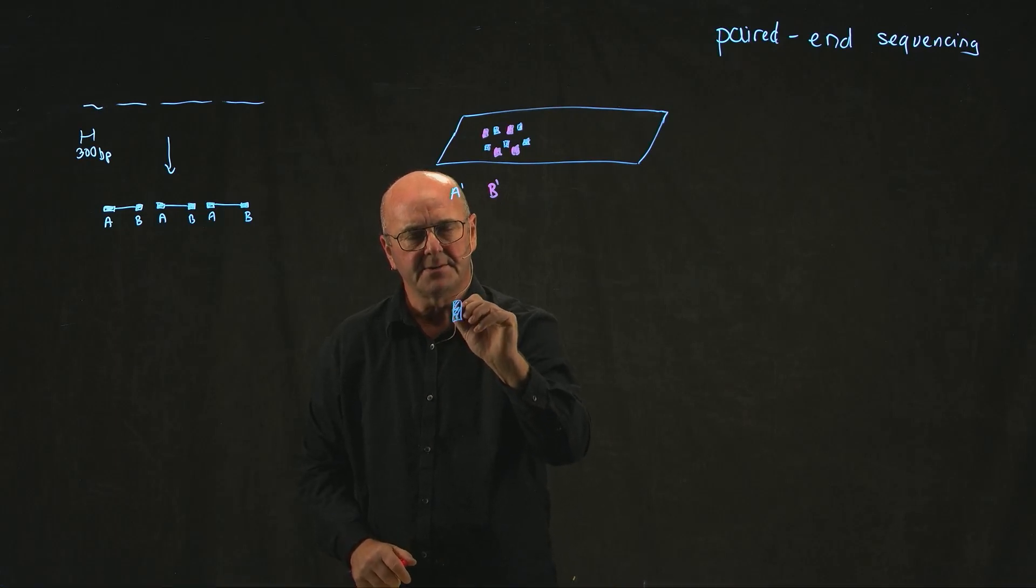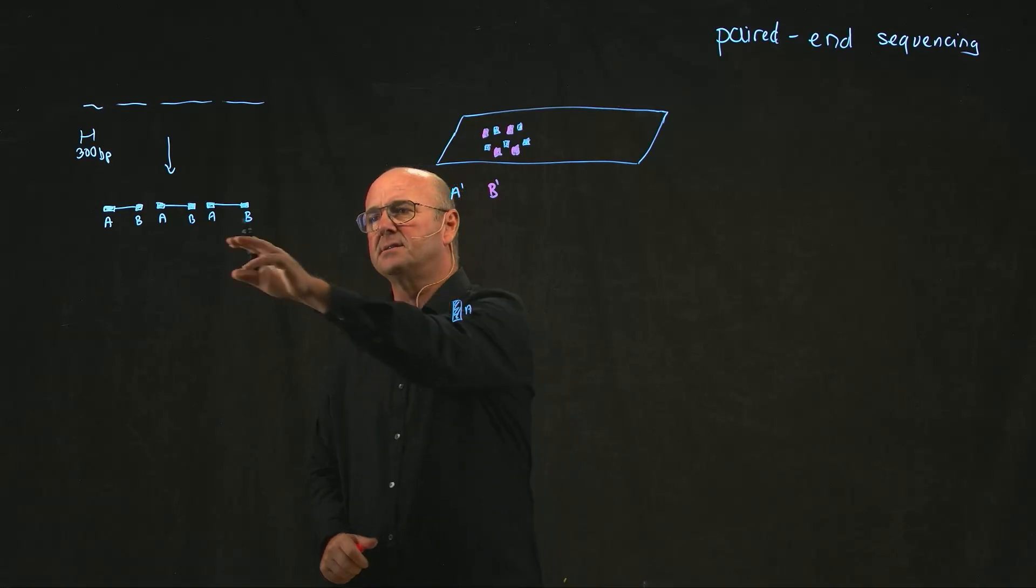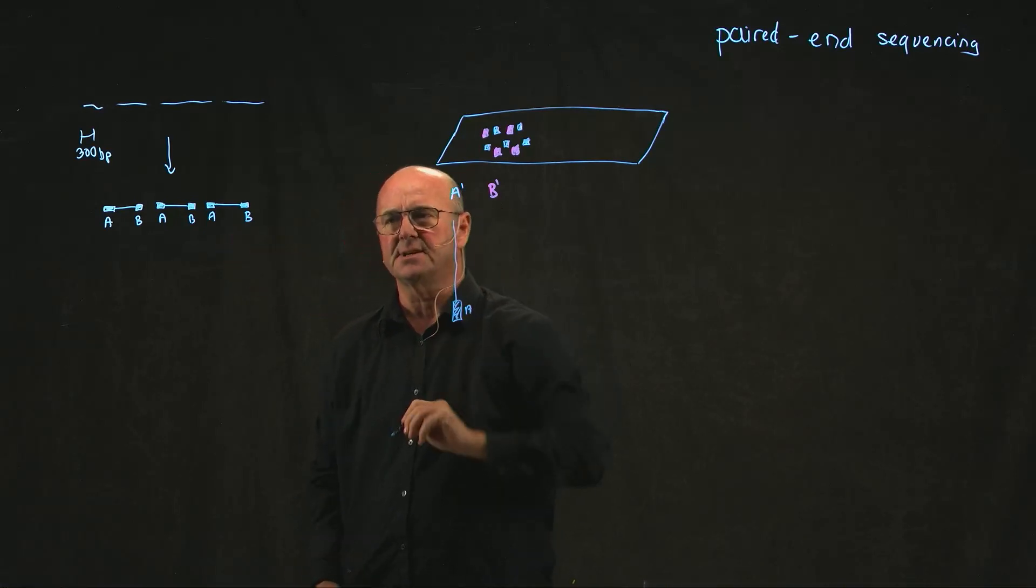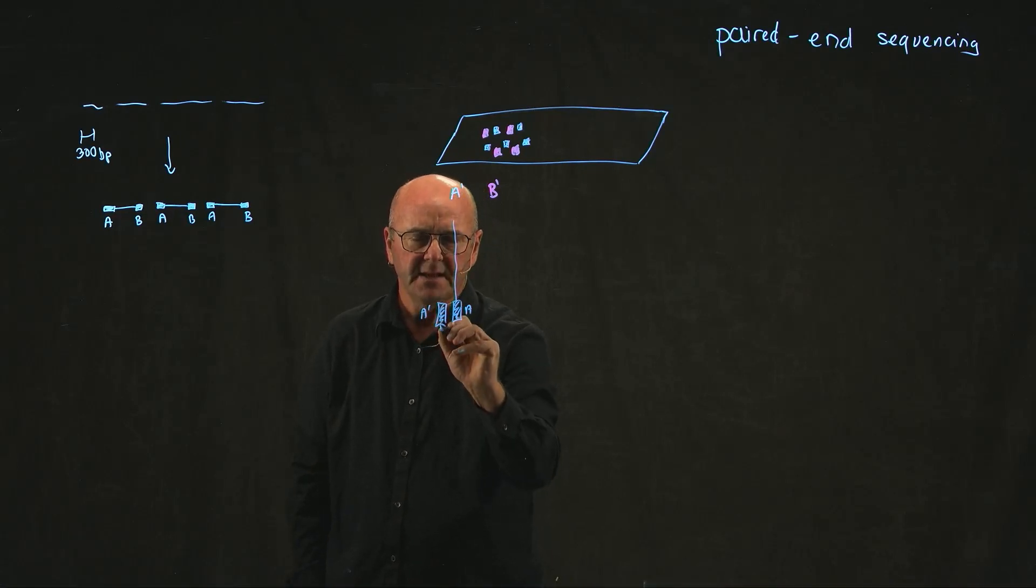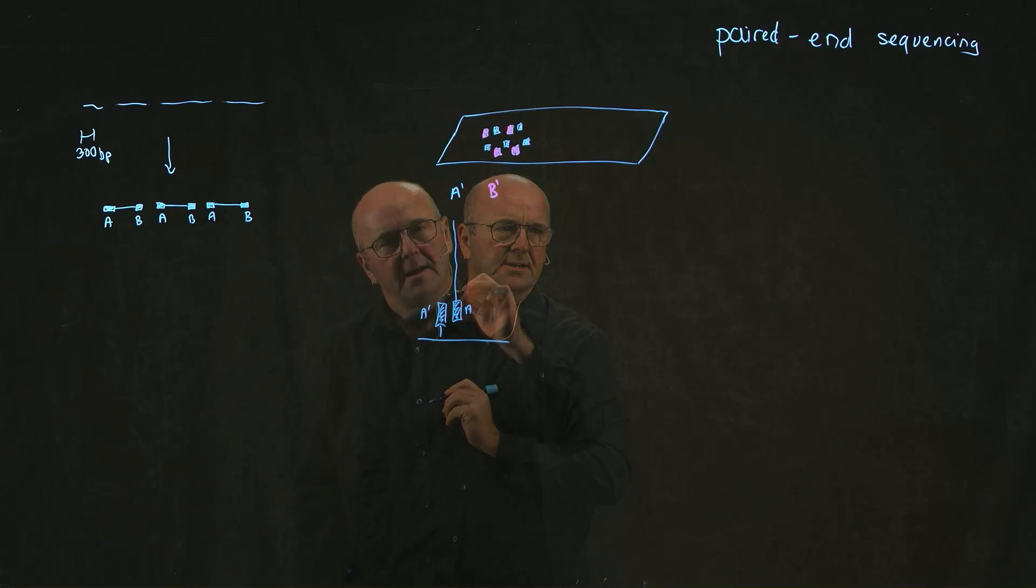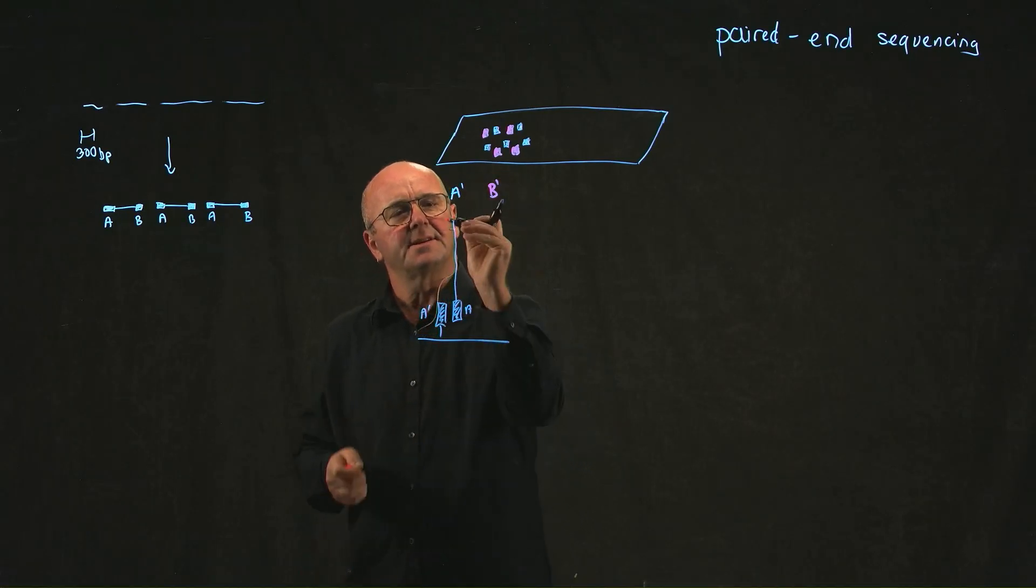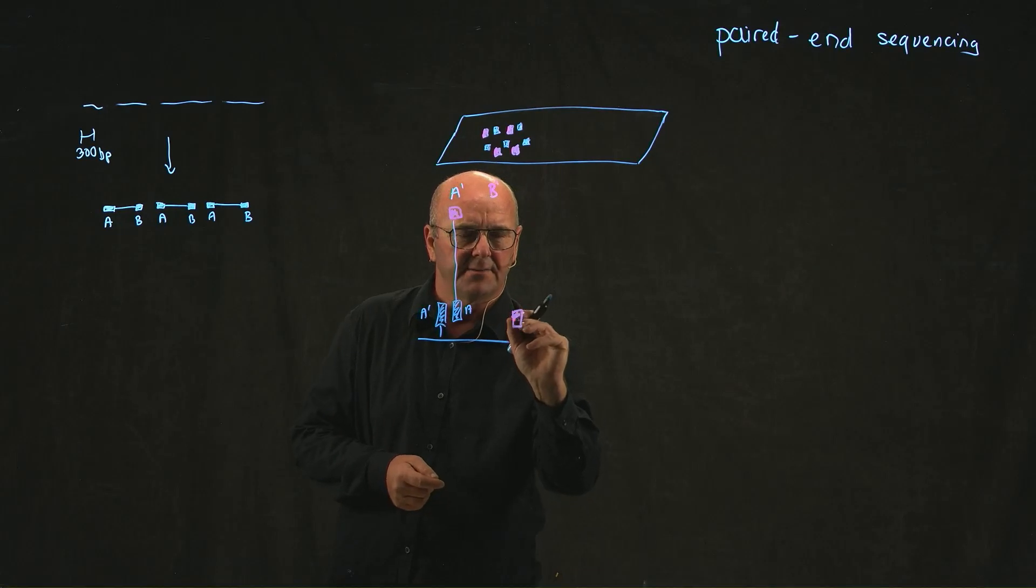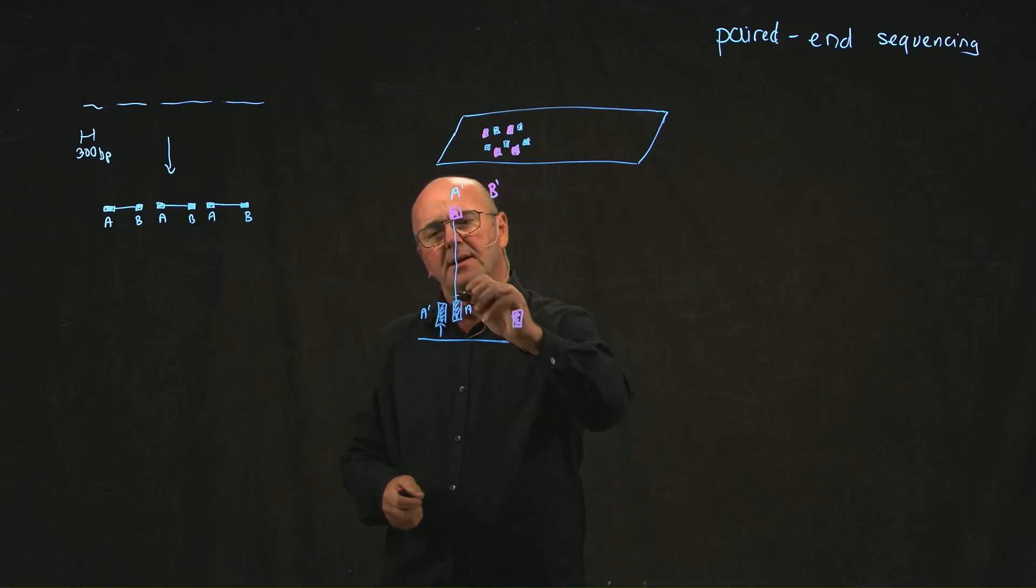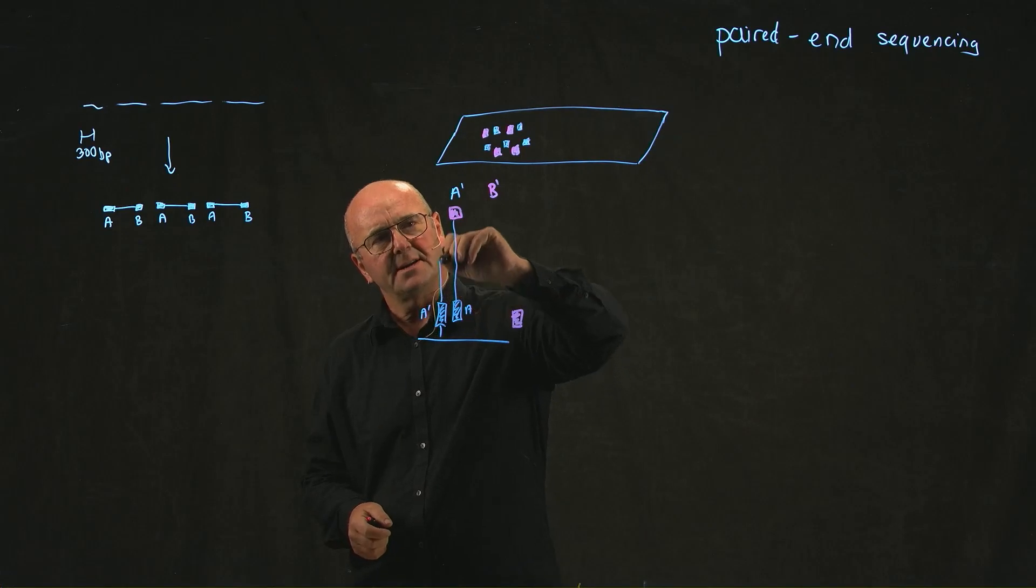Now basically what we do is we put the DNA onto the glass slide so that we have the A sequence on our DNA sequence, our fragment that we're going to sequence, and the A sequence that's complementary to it that's then stuck to the glass slide. Remember that on the end of this sequence there's a B.